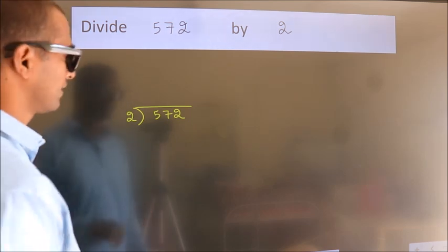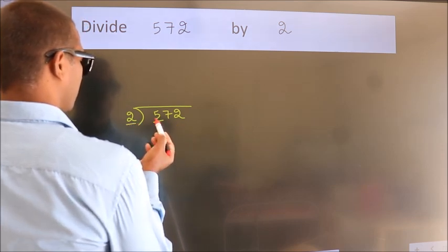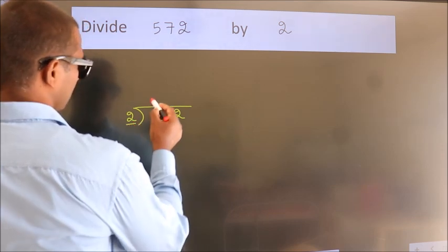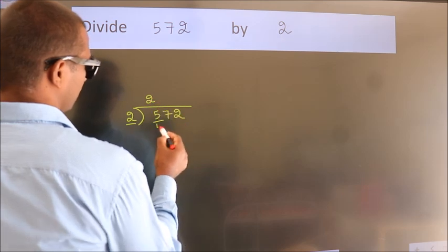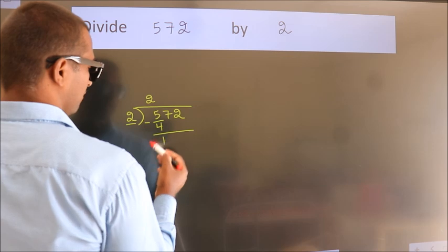Next. Here we have 5, here 2. A number close to 5 in 2 table is 2 2s, 4. Now we should subtract. We get 1.